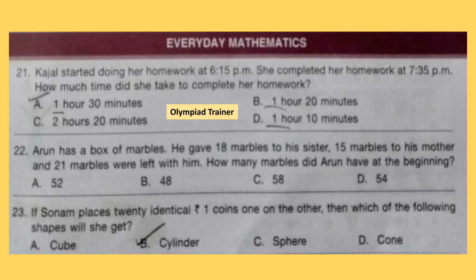Let's start with question 21. Kajal started doing her homework at 6:15 pm and completed it at 7:35 pm. How much time did she take to complete her homework? You have to find out the difference between the two times. The correct answer is option B: 1 hour 20 minutes.